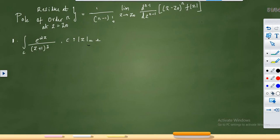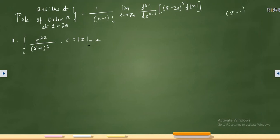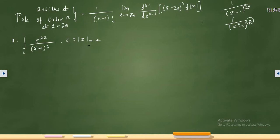In the last video we solved around 10 problems on Cauchy's Residue Theorem. All the problems we solved had a pole of order 1 — there was no power other than 1 in the denominator term. For example, if you have something like (z-1)² or (z-1)³ in the denominator, we say it is a pole of order 2 or order 3. That is what we are going to solve in this set of problems. I will give you the formula.